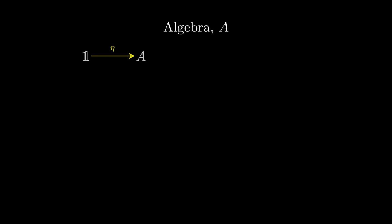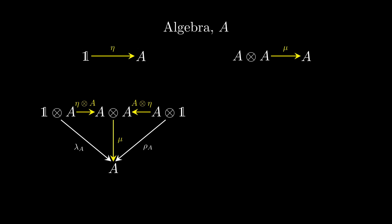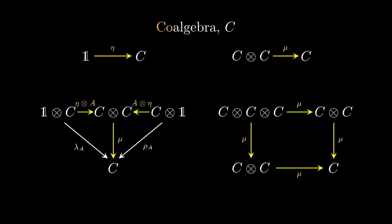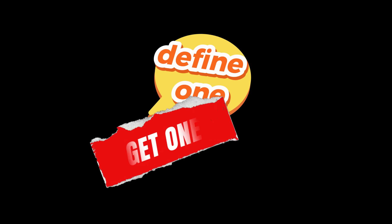For example, an algebra is an object with a multiplication map and a unit, satisfying some axioms that can be drawn diagrammatically. Accordingly, a co-algebra is an object with a co-multiplication map and a co-unit, satisfying dual axioms.